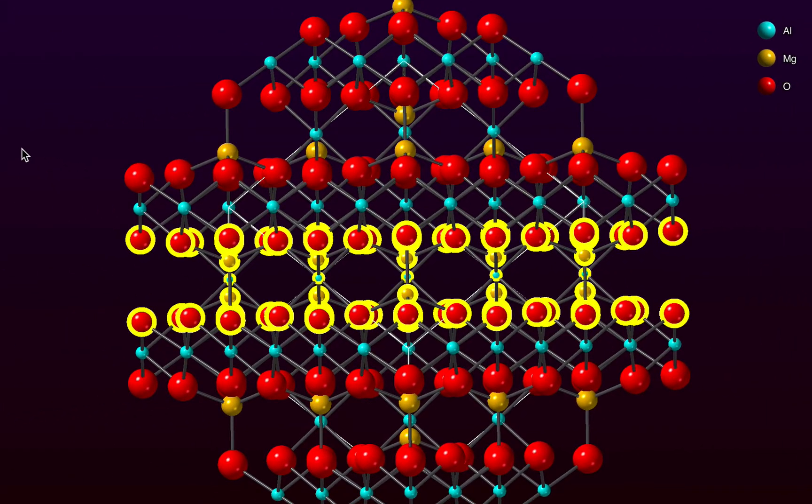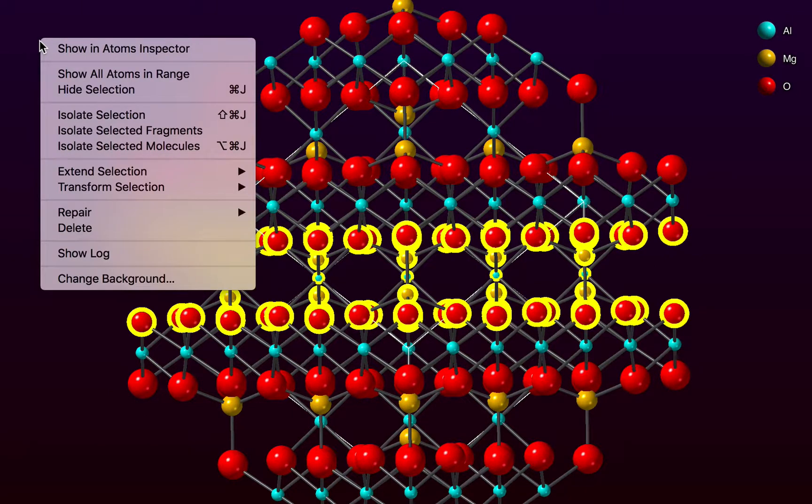Now I want to focus on the selection and I can right click in the graphics pane and choose the isolate selection command which has a useful keyboard shortcut command shift J.